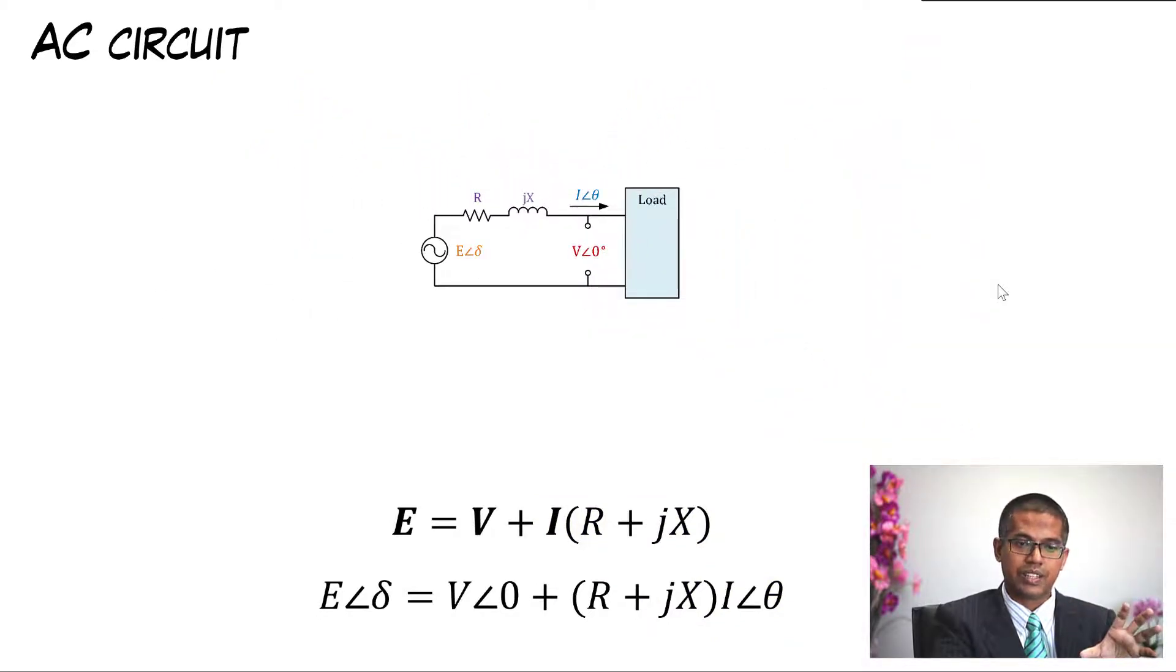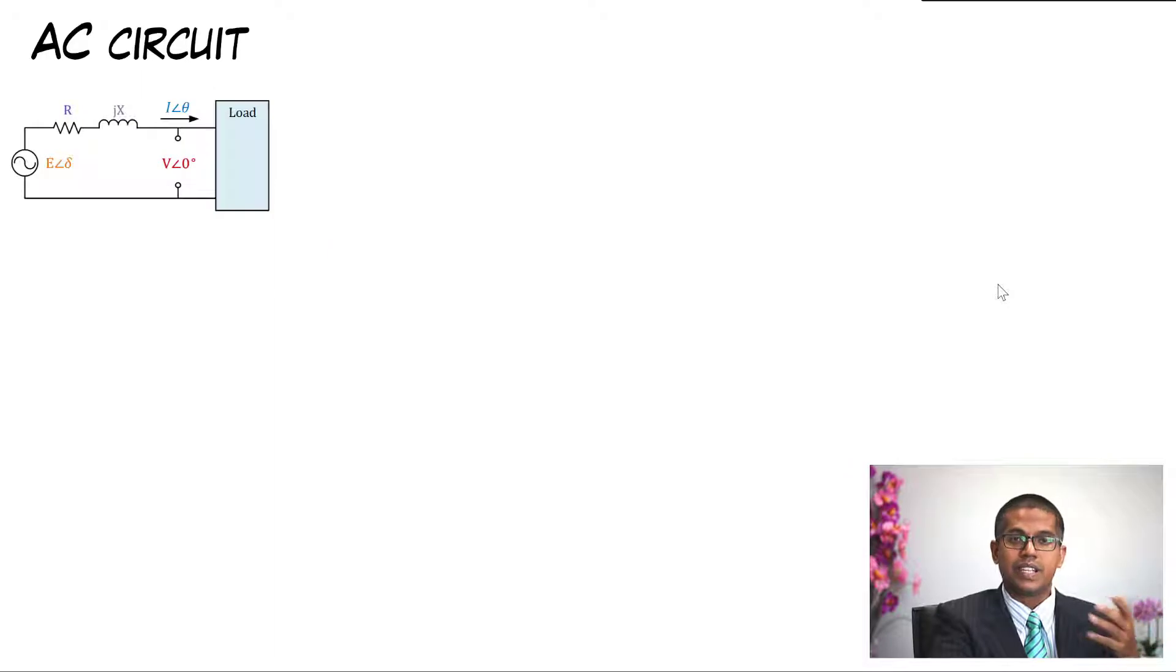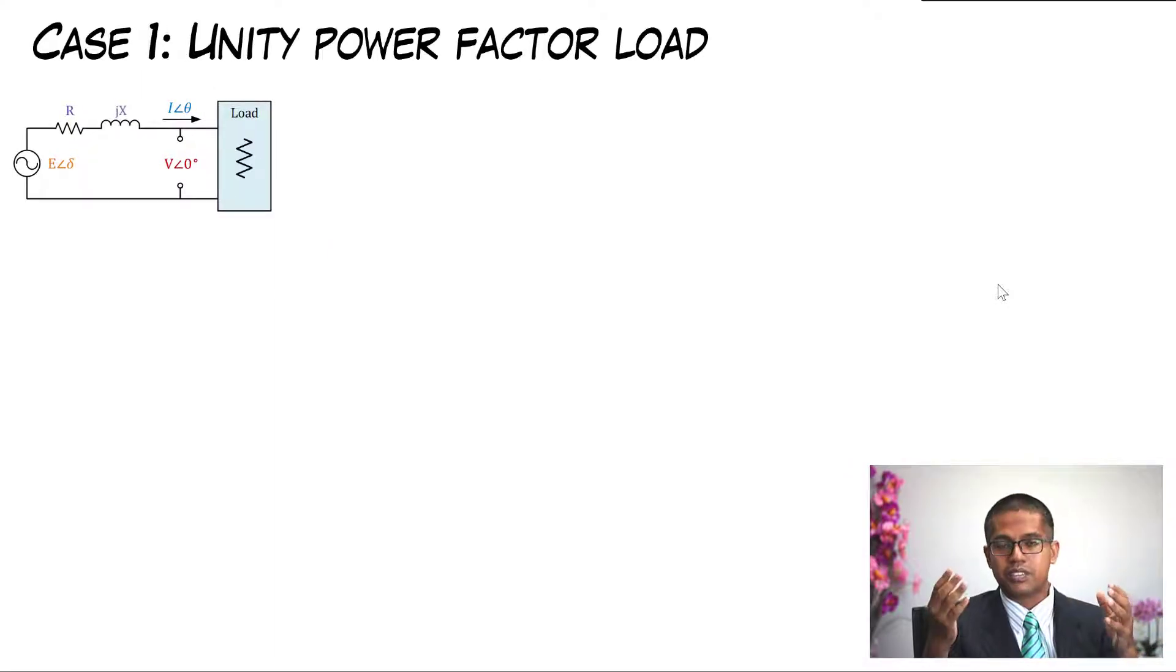Let's shrink this, put it to the side, and then we see the phasor diagram. There's three cases in this voltage drop in AC circuit. The first one is a unity power factor load, where the load is unity power factor. In this case, I put resistor there so you can see this is unity power factor load. So what happens at unity power factor load? Well, as you can guess, the I is in phase with the voltage, so theta equals zero. When theta equals zero, IR is at the same phase with V.